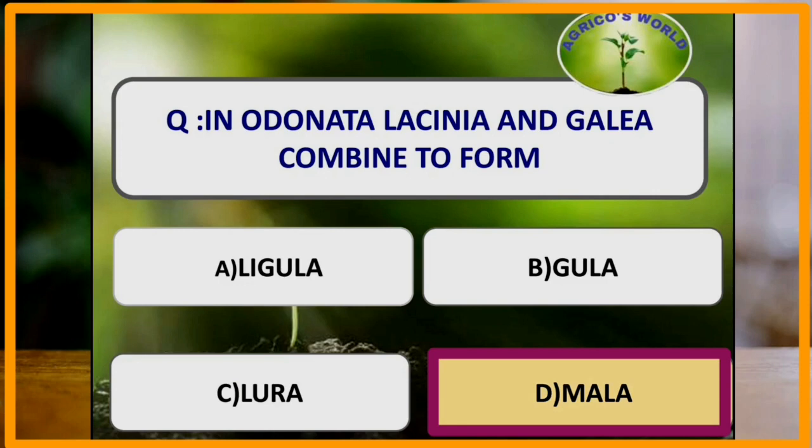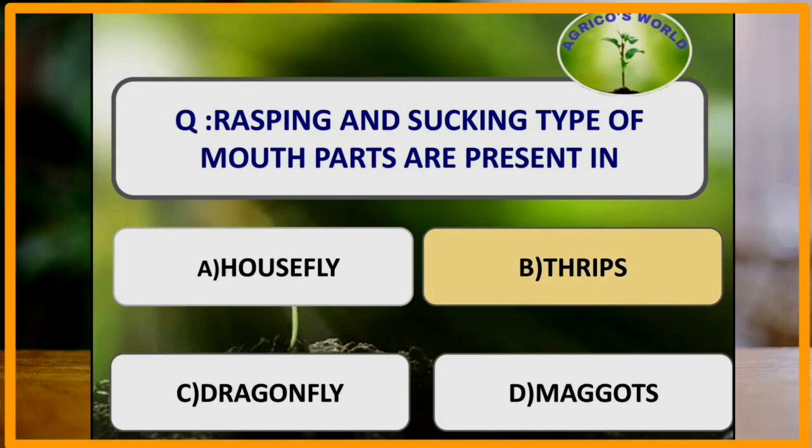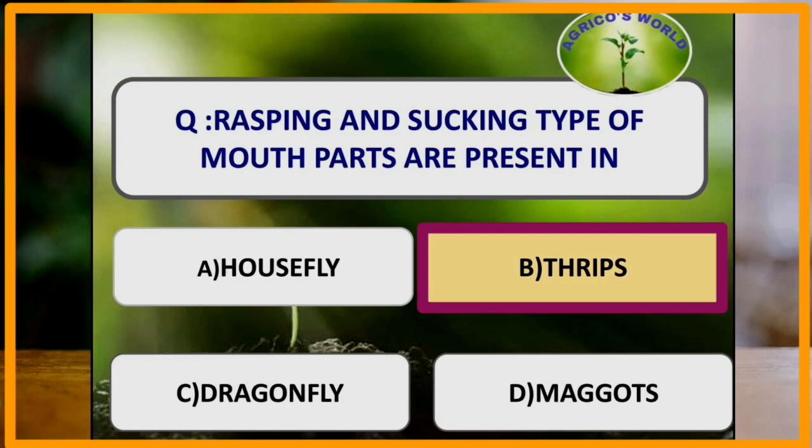Housefly has how many facets in each eye? Housefly has 4,000 facets in each eye. Rasping and sucking type of mouthparts are present in which of the following insects? Rasping and sucking type of mouthparts are present in thrips.